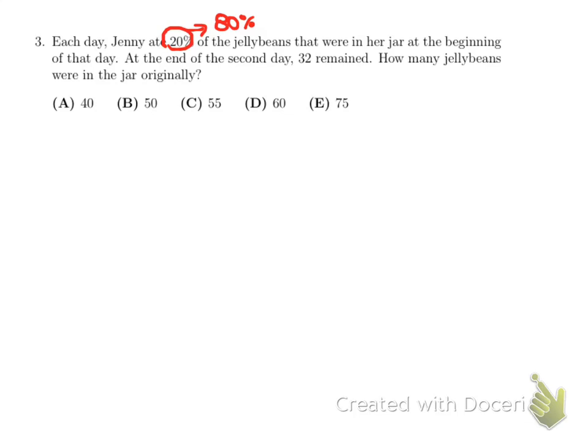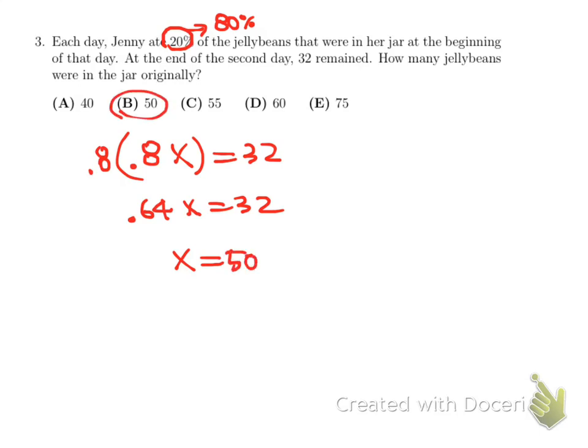So now at the end of the second day, that means in the beginning of the first day, Jenny ate 20%. So that means we have 0.8 of the original count. But in the beginning of the second day, she ate another 20%, so we have 80% left of the previous amount. But that should be equal to 32. And here we get 0.64x must be equal to 32. So to find the value of x, we can divide it by 0.64, then x should be equal to 50.